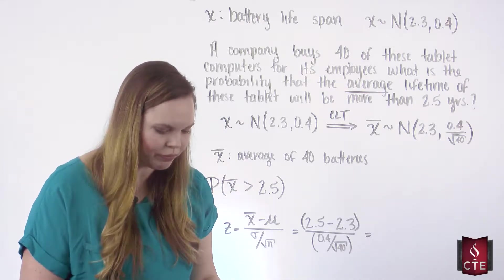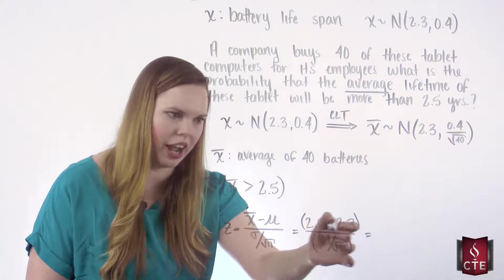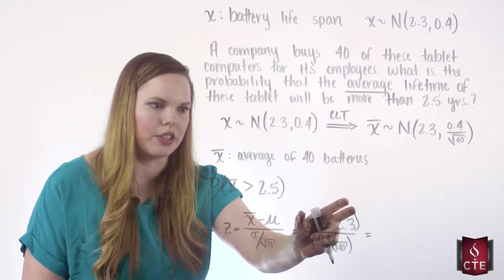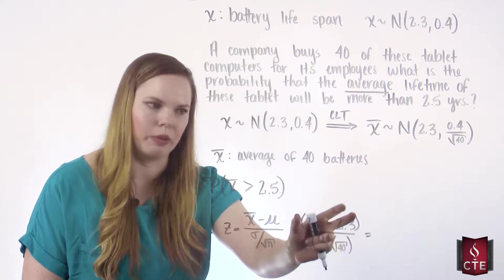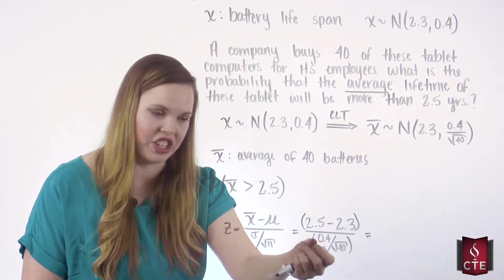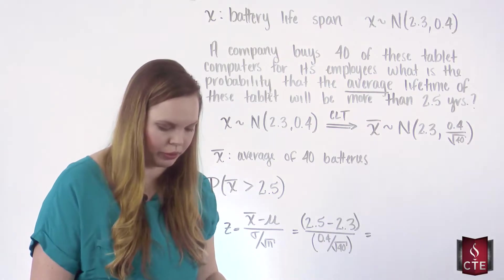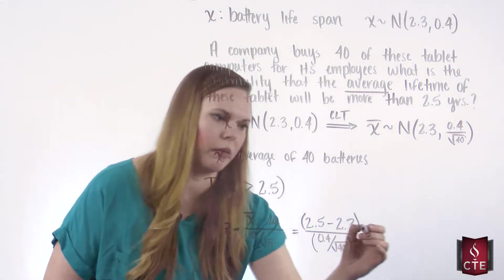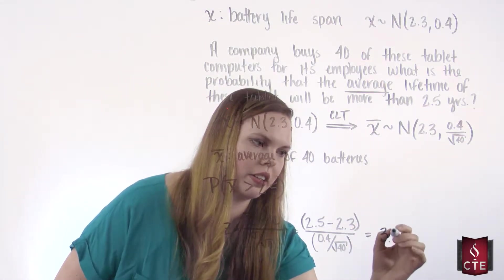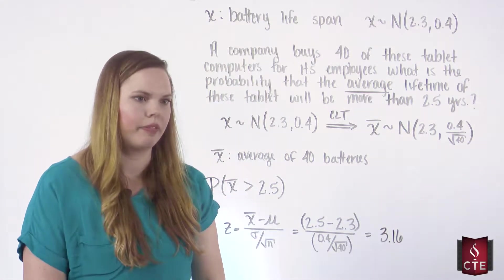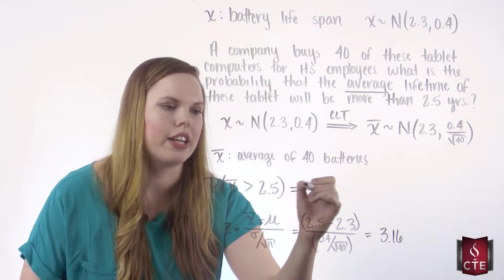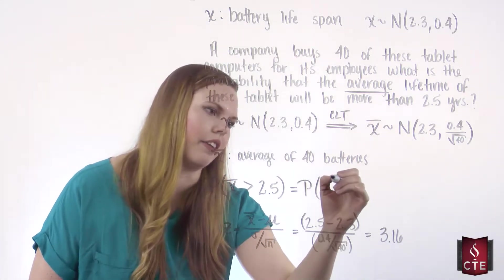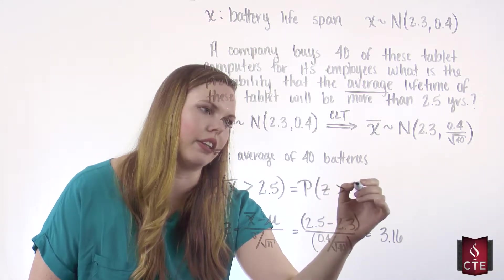We get a Z score of 3.16. So we convert this to a standard normal problem: the probability that Z is greater than 3.16.